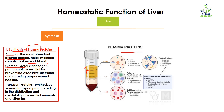The second plasma protein includes clotting factors such as fibrinogen and prothrombin. These clotting factors are essential for preventing excessive bleeding and ensuring proper wound healing. Whenever you have a cut, fibrinogen and prothrombin move to the injury site and form a clot, sealing the cut so that loss of blood is prevented. The liver is involved in the synthesis of these clotting factors.